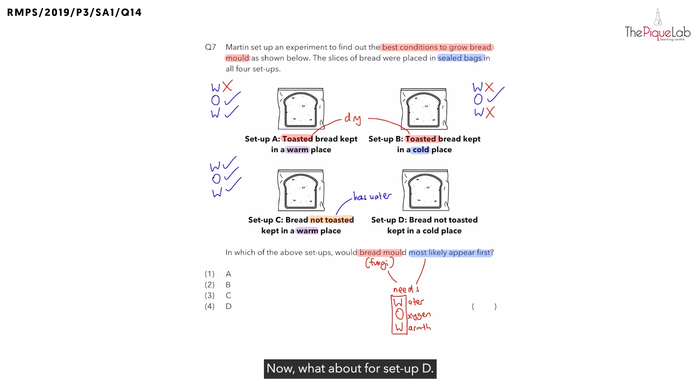Now, what about for setup D? Same thing. Let's write out the three conditions. Is there water present? Yes. Because the bread was not toasted, so there is water. Is there oxygen? Yes. What about warmth? No, there is no warmth because if you look at the bread, where was it placed at? It was placed in a cold place.